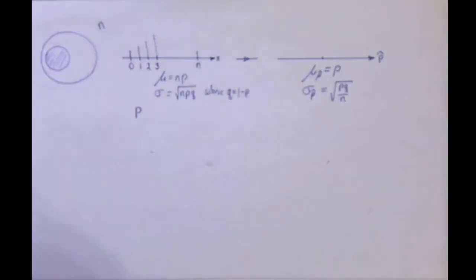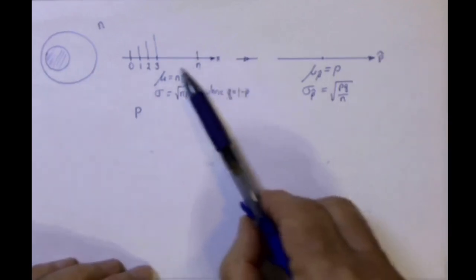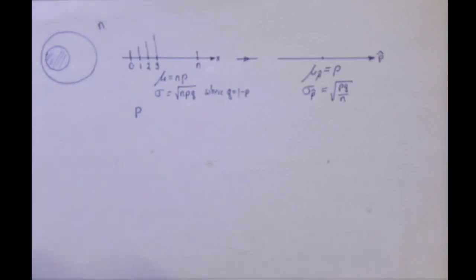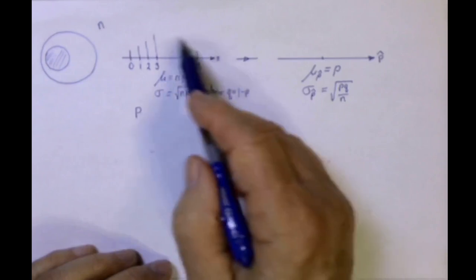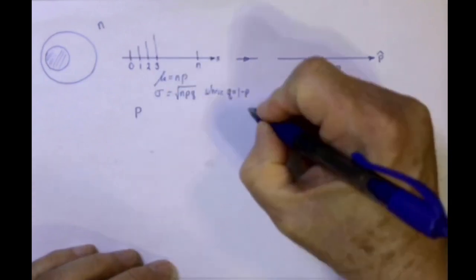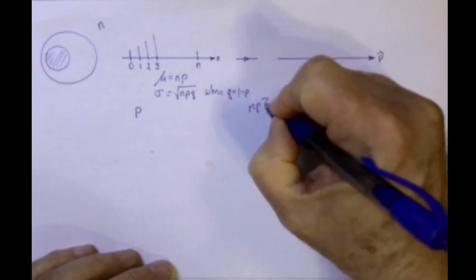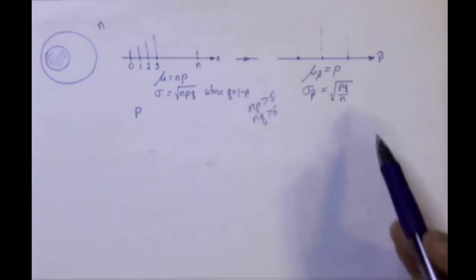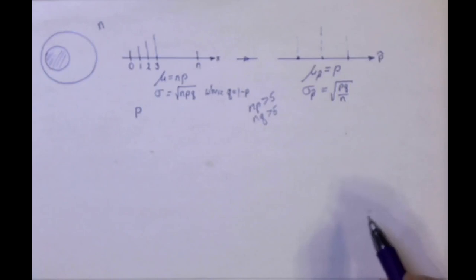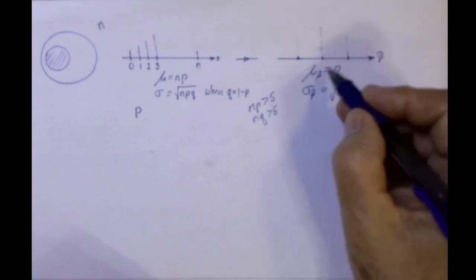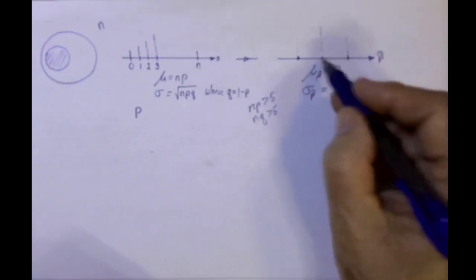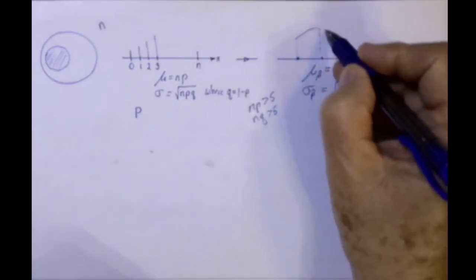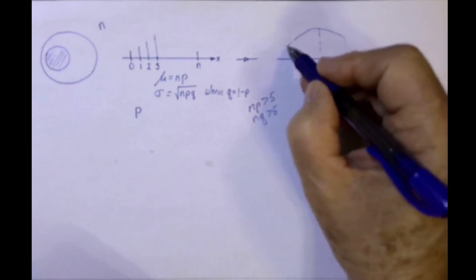Both of these are just binomial probability distributions — here we're measuring things in terms of sample proportions, and here in terms of the number of successes in a particular sample. It is well known that these will be normally distributed if n times p is greater than 5 and n times q is greater than 5. Under those assumptions, the distribution of sample proportions can be well estimated by a normal distribution, with the high point at the mean and inflection points one standard deviation above and below.